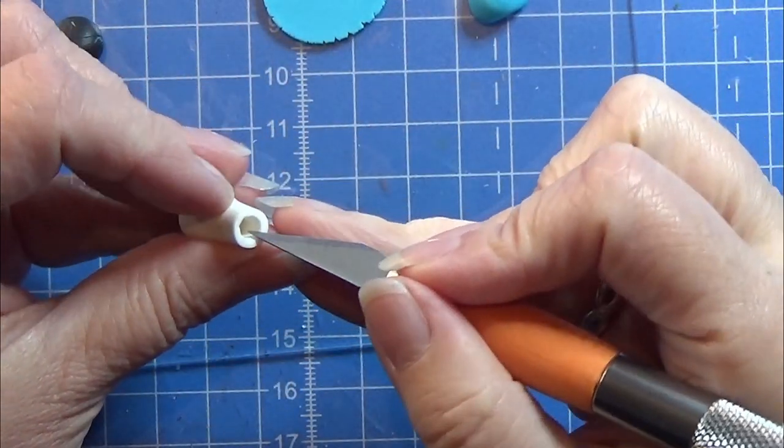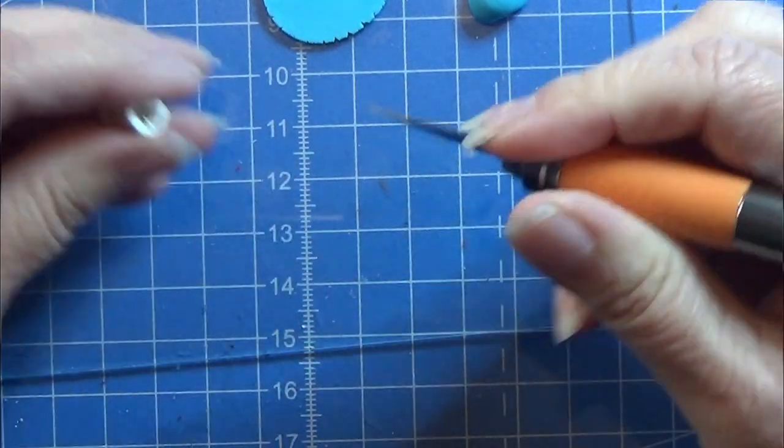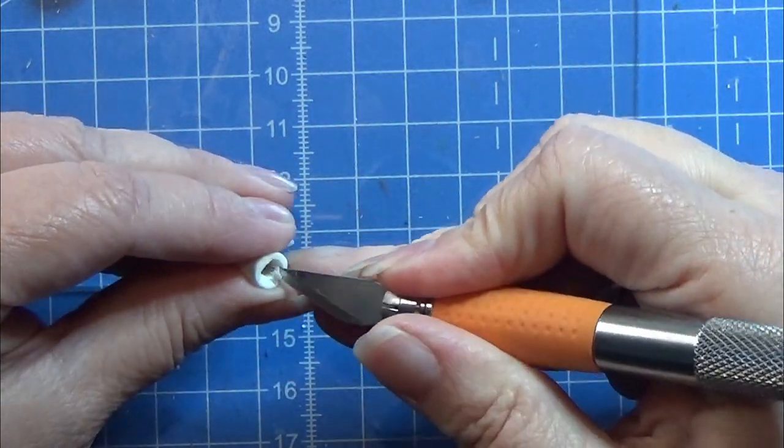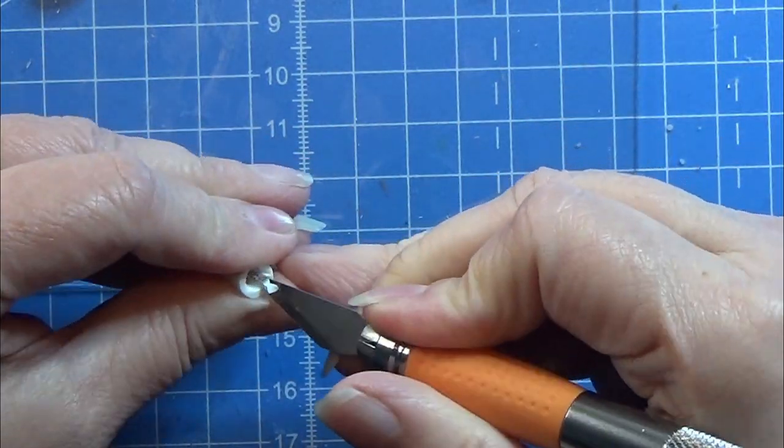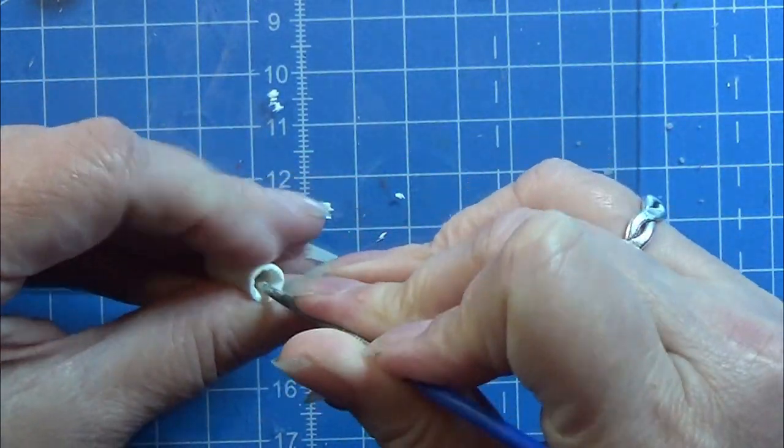After baking and cooling off, I can take my exacto knife and carefully thin this side here a bit out so it's not as thick on the inside, just to make it a bit thinner. Be careful and watch your fingers.